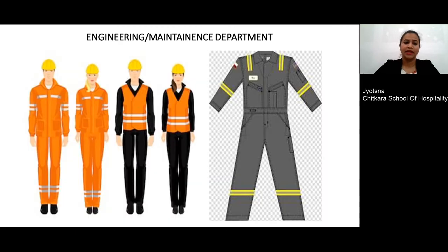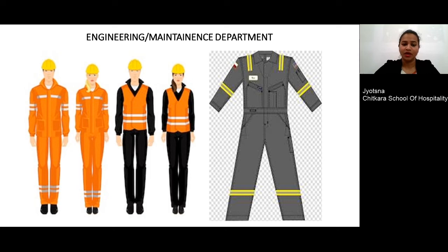The next important department is maintenance or engineering, responsible for maintaining all electrical equipment in the hotel. For male or female, an overall coat called a dungry can be given, which has maximum pockets on the sleeves, at the knees, and at the waist for storing equipment. Apart from the dungry, a trouser and a full closed-neck jacket can also be given. Some hotels also prefer to provide a safety cap and safety boots or gum boots.